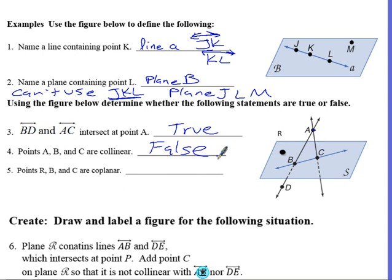And then the last one is points R, B, and C are coplanar. This R, actually, sorry, goes to this point right here. So, are R, B, and C all in that plane? Yes, they are. So, we can say that those things are coplanar.